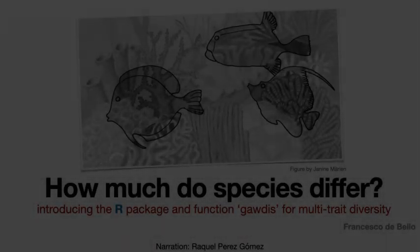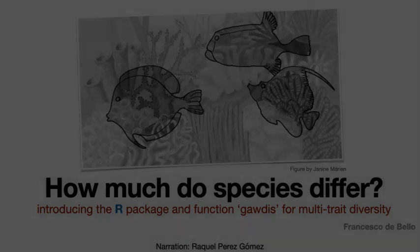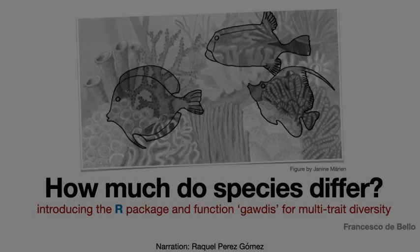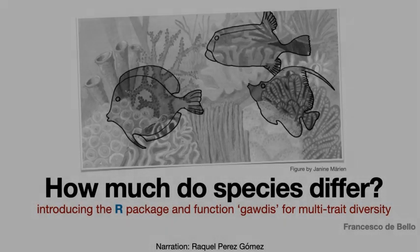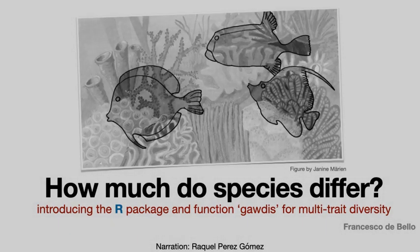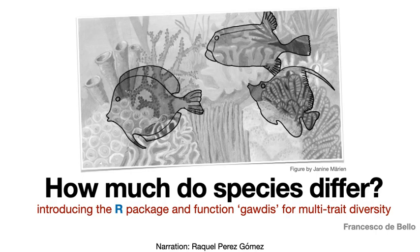How much are species different between them? Is a given ecosystem composed by species which are more different between them than in another ecosystem? Are species differences associated to ecosystem functions and services? Answering all these key ecological questions require a first basic step: the quantification of species differences in terms of various functional traits.